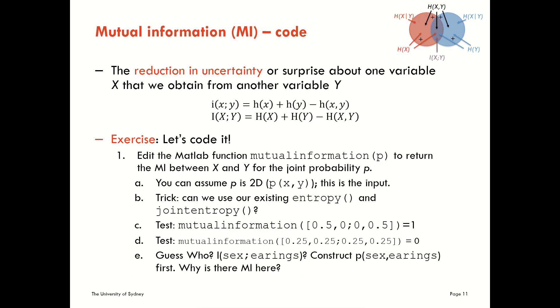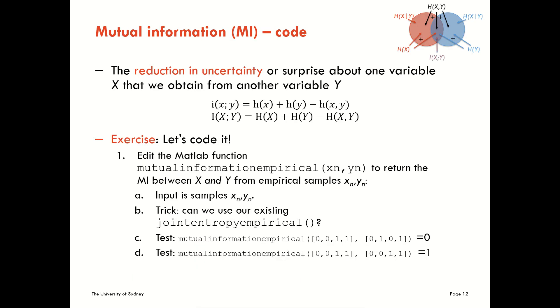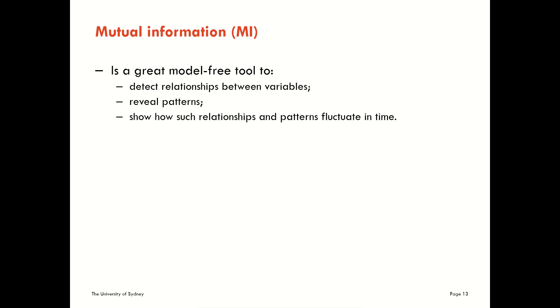I'm going to skip over the other exercises now. You can follow the activities on our learning site to do those. And what I want to do is give a short conclusion about mutual information. It's a great model-free tool that we can use to detect relationships between variables, to reveal patterns, and to show how such relationships and patterns fluctuate in time. There are many things that we can do with the mutual information, which we'll see in some of our examples and later in the course.